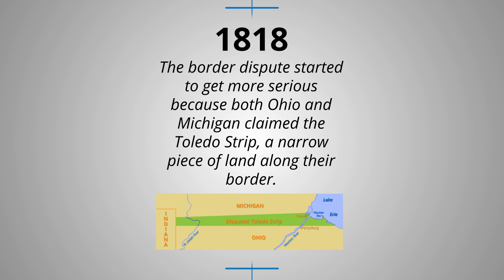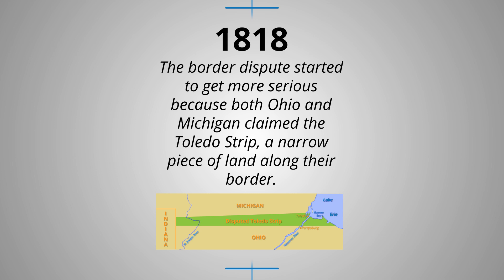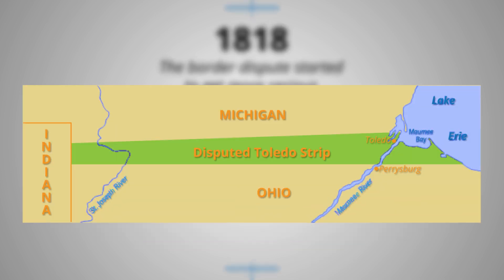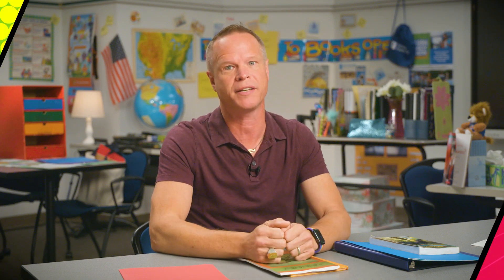In 1818, the border dispute started to get more serious because both Ohio and Michigan claimed the Toledo Strip, a narrow piece of land along their border. Land surveys showed different things for the territory of Michigan and Ohio state borders — they just didn't match, and both believed that the Toledo Strip belonged to them.